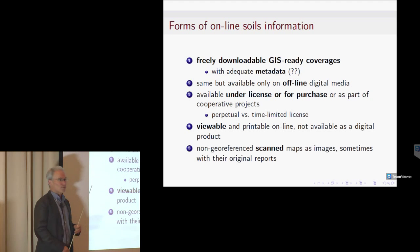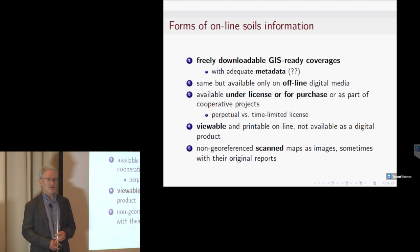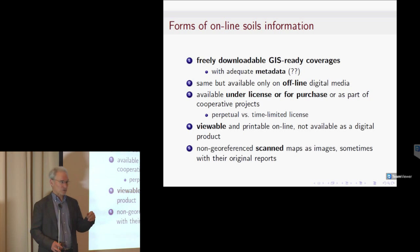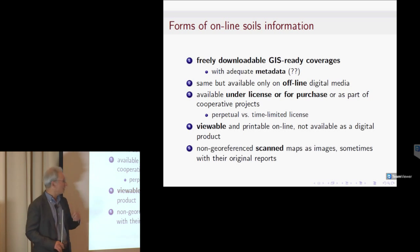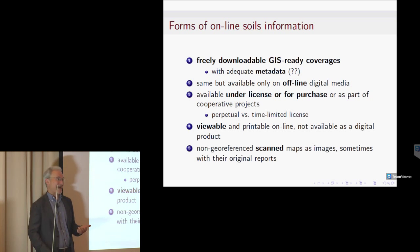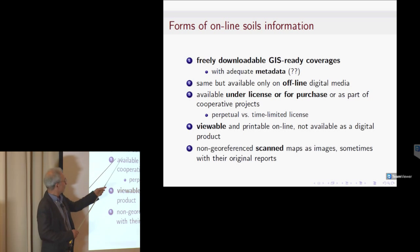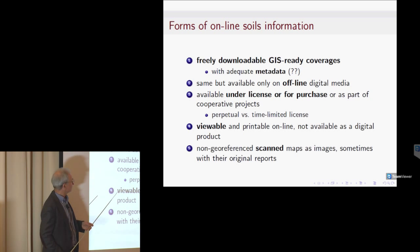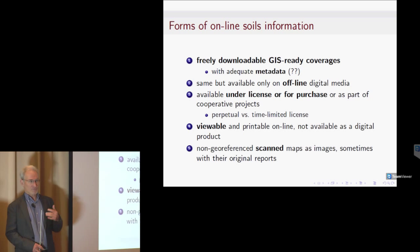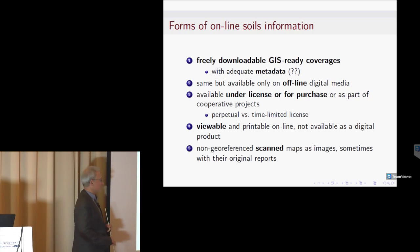A second form — sending a DVD — is becoming less and less common. Almost everything is now available via networks. A third form is GIS coverages you can't get without a license — you have to pay money and obtain one. One important thing: make sure you get a perpetual license, meaning even after paying, you can use the data for your stated purposes as long as you want.